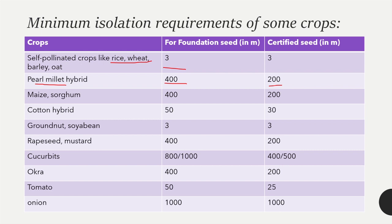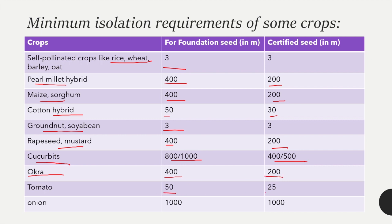For maize and sorghum: foundation seed 400 meters, certified seed 200 meters. For cotton hybrid: foundation seed 50 meters, certified seed 30 meters. For groundnut and soybean: both foundation and certified seed 3 meters. For rapeseed and mustard: foundation seed 400 meters, certified seed 200 meters. For cucurbits: foundation seed 800 meters, certified seed 400 meters. For okra: foundation seed 400 meters, certified seed 200 meters. For tomato: foundation seed 50 meters, certified seed 25 meters. For onion: 1000 meters for both foundation and certified seeds.